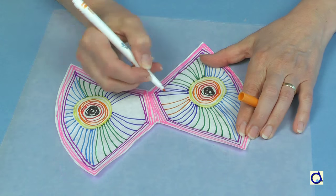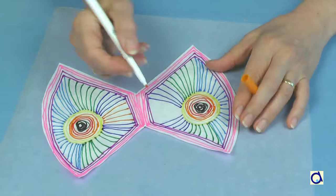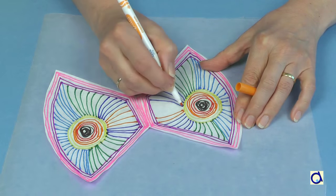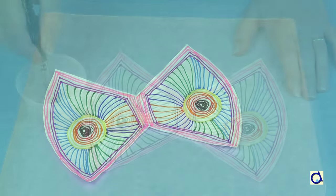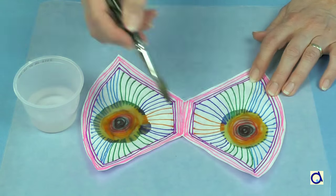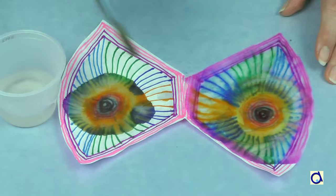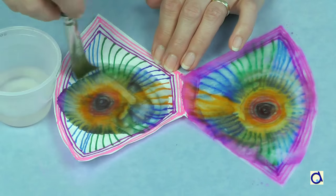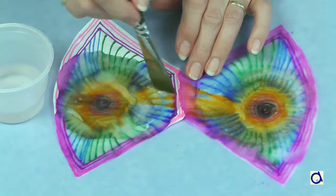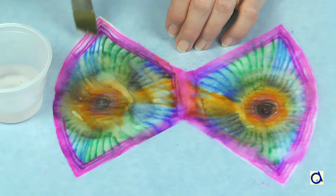If you want to stay closer to nature, represent the wings so that one is the mirror image of the other. When you are satisfied, take a large brush and dab the filter with water. The colors will spread and mix to give interesting effects. Let the wings dry.